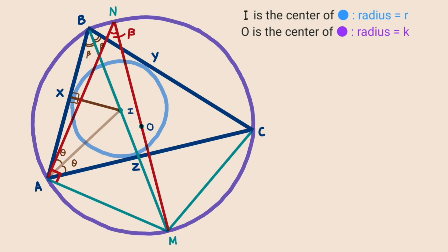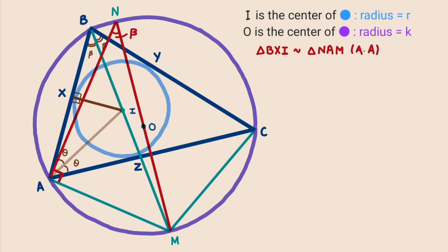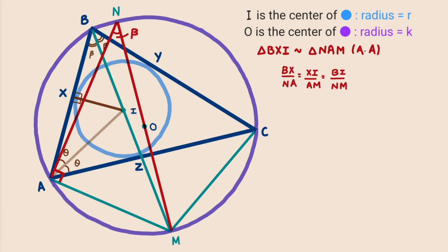Observing the diagram, triangle BXI is similar to triangle NAM by the angle-angle property — one common angle is β and the other is 90 degrees. As two triangles are similar, the ratio of their sides is equal: BX/NA = XI/AM = BI/NM. Comparing the middle ratio with the last, XI is the radius of the incircle so it equals R, and NM is the diameter of the circumcircle so it equals 2K. Cross-multiplying gives the first important equation: 2K·R = BI × AM.